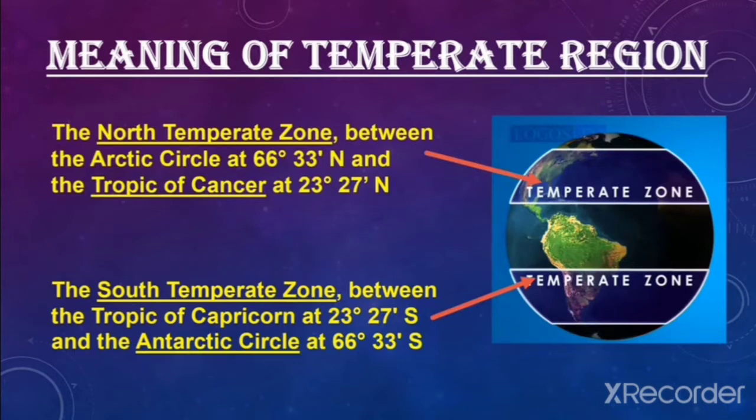The north temperate zone lies between the Arctic Circle at 66.5 degrees north and the Tropic of Cancer at 23.5 degrees north. The south temperate zone lies between the Tropic of Capricorn at 23.5 degrees south and the Antarctic Circle at 66.5 degrees south.